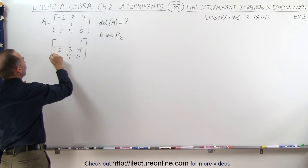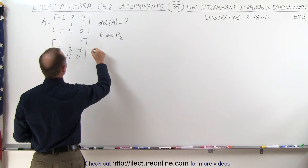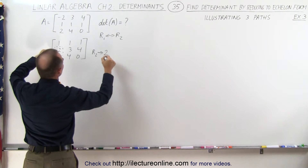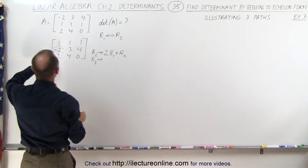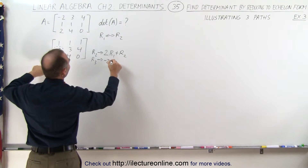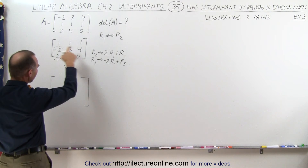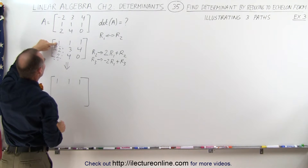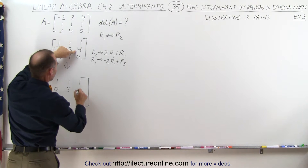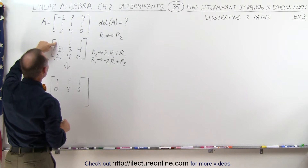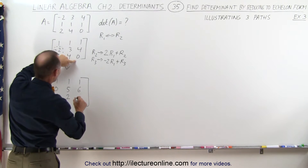Next, we're going to eliminate those two elements in column 1, and this is the same for all three approaches. To do that, we take R2 and replace it by positive 2 times R1 added to R2, and take R3 and replace it by negative 2 times R1 added to R3. This gives: first row unchanged; second row: 0, 5, 6; third row: 0, 2, negative 2.